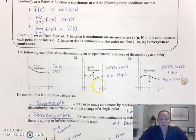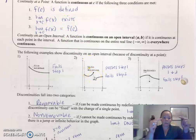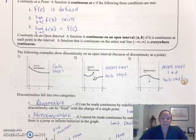For this one, number two, notice the function is defined within the interval everywhere, but it fails step two, where the limit as x approaches C of f of x exists. If you approach from the left and the right, your fingers are not going to come together. That limit does not exist. You're approaching different values from the left and the right, so it fails step two.